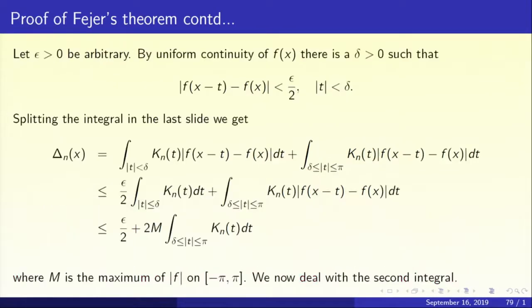Let epsilon greater than 0 be arbitrary. Recall that we have a function which is 2pi periodic and continuous on the real line. Such a function must be uniformly continuous. Why should a 2pi periodic continuous function be uniformly continuous? I'd like you to think about this.